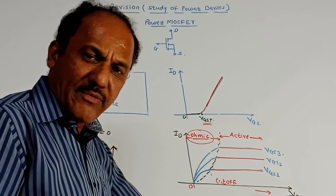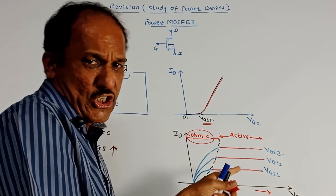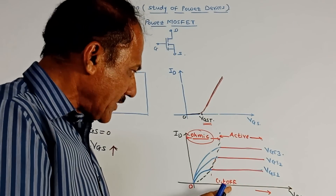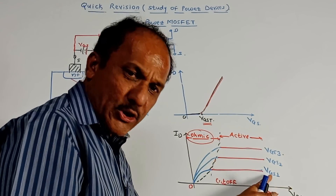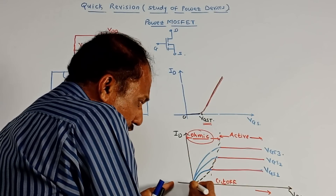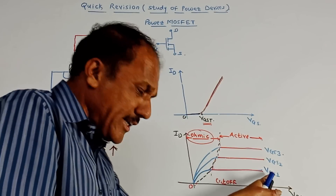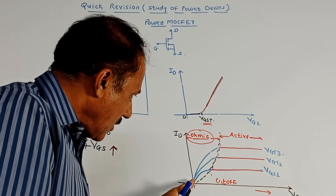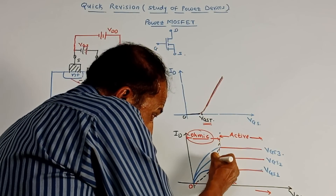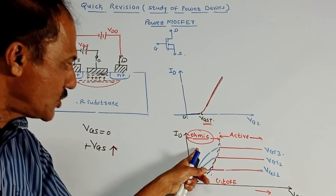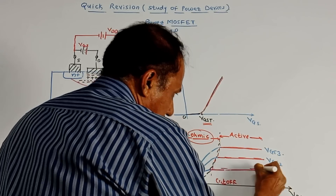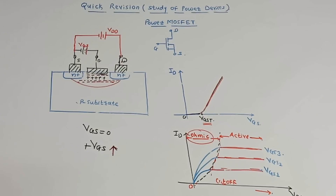The output characteristic is the graph of ID versus VDD. There are three important regions. First, the cutoff region: if the applied voltage is below some threshold, the device does not conduct. Three graphs are drawn for VGS1, VGS2, and VGS3. In the initial portion up to the dotted line — regardless of the VGS value — ID increases as VDD increases. This is called the ohmic region. After that, even if VDD increases, ID remains constant — this is the active region of the power MOSFET.